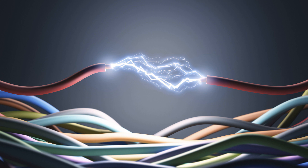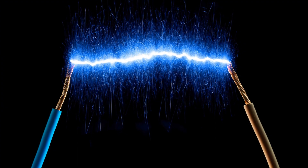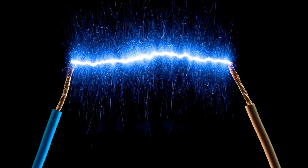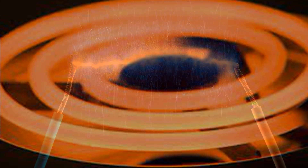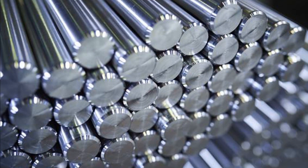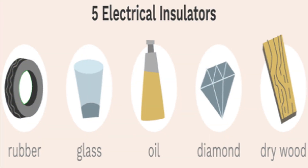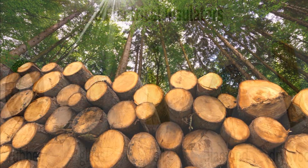Heat and electrical conductivity: It is a property of certain substances to allow heat or electric current to pass through them. Substances that let heat or electricity pass through them are called good conductors of heat or electricity, e.g. metals. Substances that do not let heat or electricity pass through them are called heat or electrical insulators, e.g. wood and plastic.